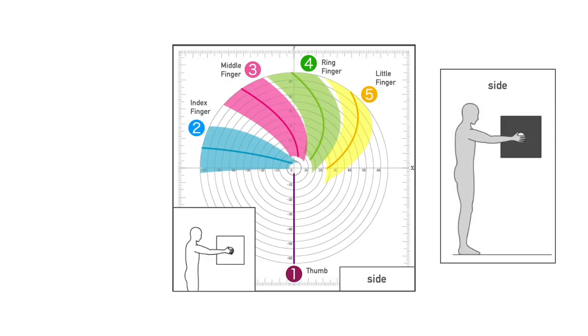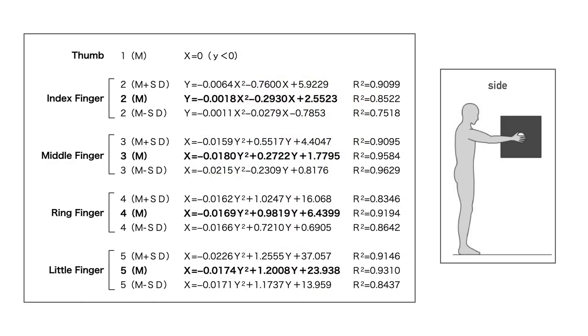In the side setting, the larger the diameter, the greater the curvature of the line drawn by the ring and little fingers. And the distance between the fingers seems to become wider. These are the formulas in the side setting.